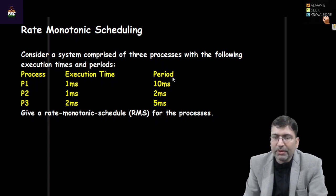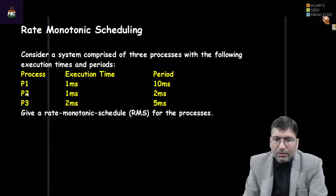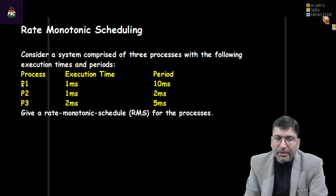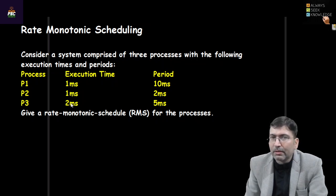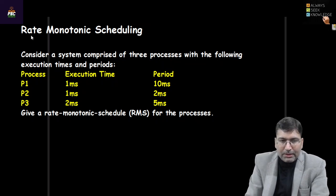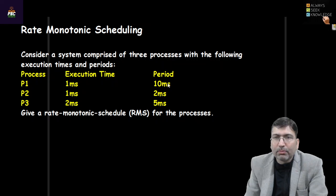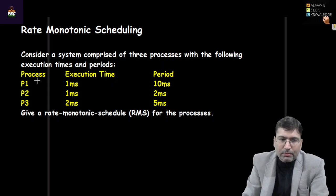Once in every 10 milliseconds this process will be initiated, then after 10 milliseconds again it will be initiated, and so on. P2 will be initiated after every 2 milliseconds, and P3 after every 5 milliseconds. Once a process is initiated, it requires a certain execution duration — for example, 1 millisecond or 2 milliseconds. In Rate Monotonic Scheduling, the priority of the process is static in nature and is decided based on the period of the process.